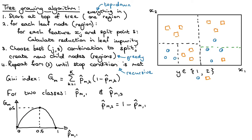Lower Gini index is better. For example, in this region here all points come from class two, so the proportion from class one is zero, giving a Gini index of zero. In another region all points come from class one, meaning p̂_m1 equals one, also giving a Gini score of zero — both are good scores.